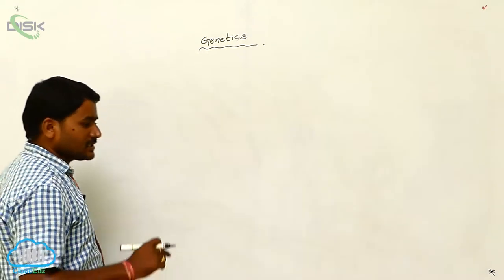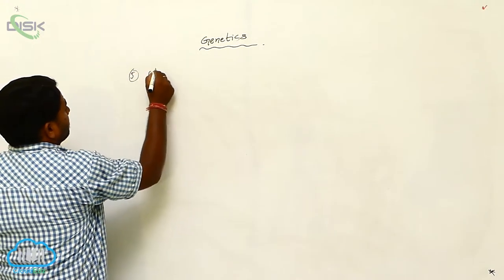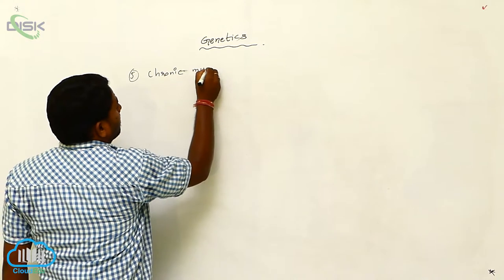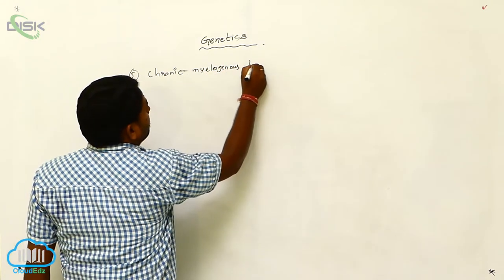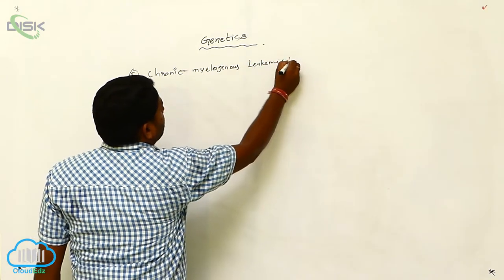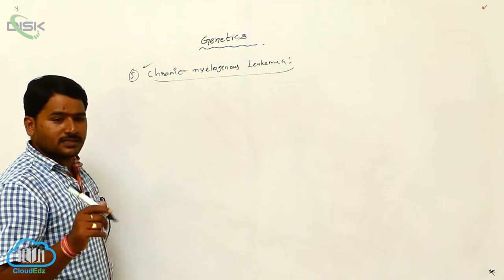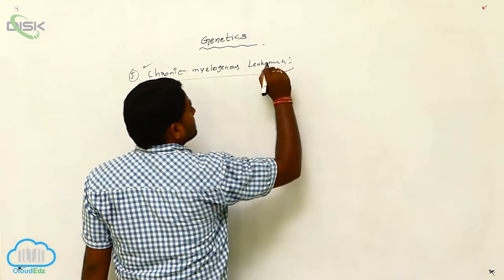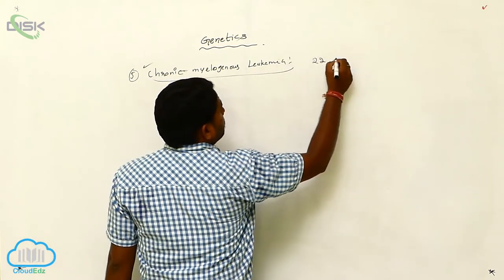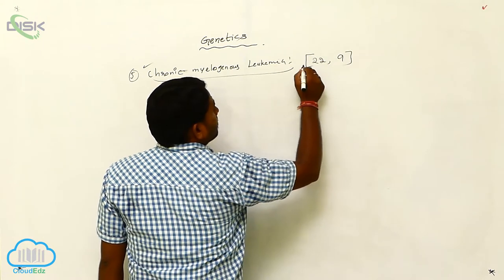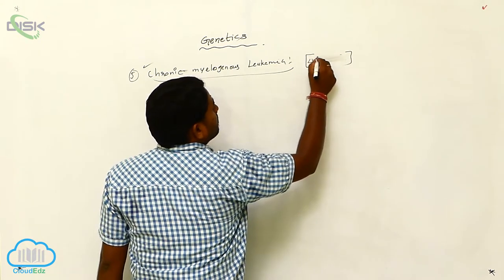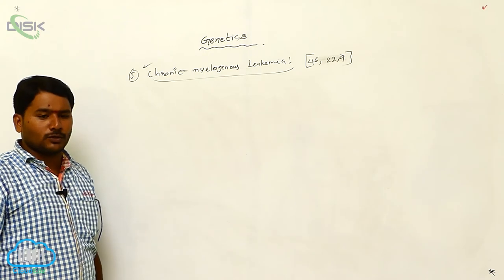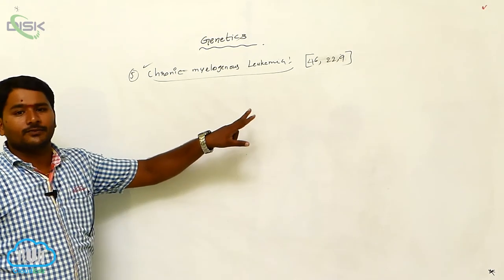The last condition is chronic myelogenous leukemia (CML). Here the total number of chromosomes is 46, but there is an exchange of a part of chromosomes between the 9th and 22nd chromosomes — a translocation.